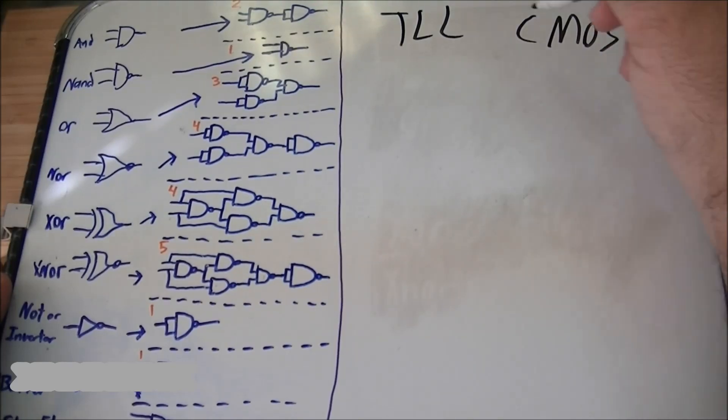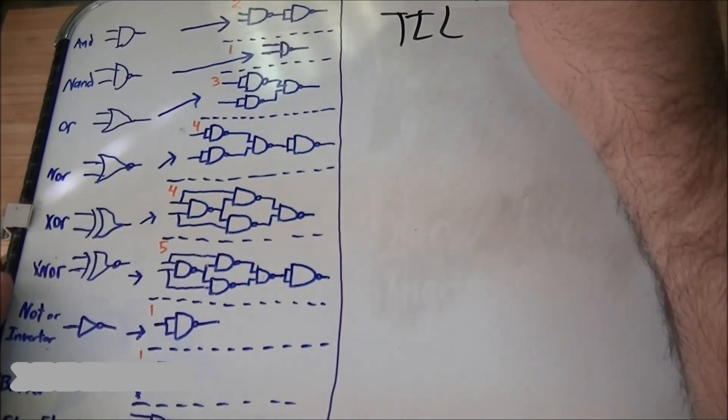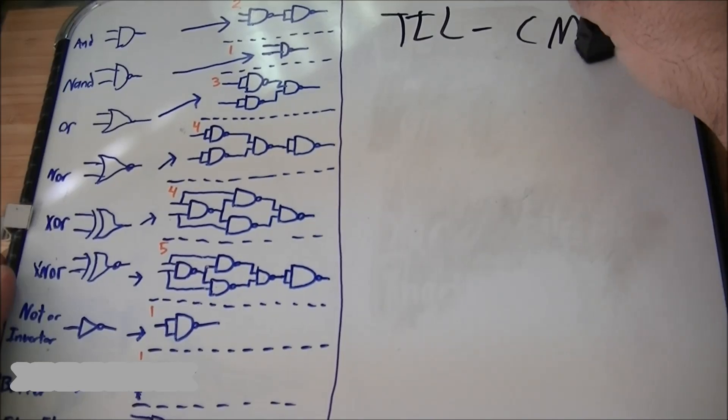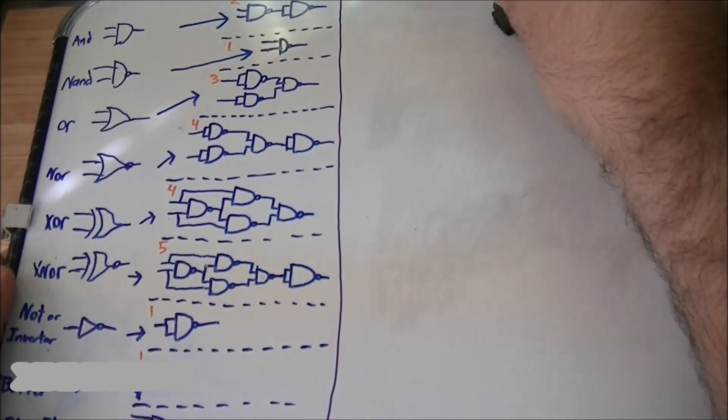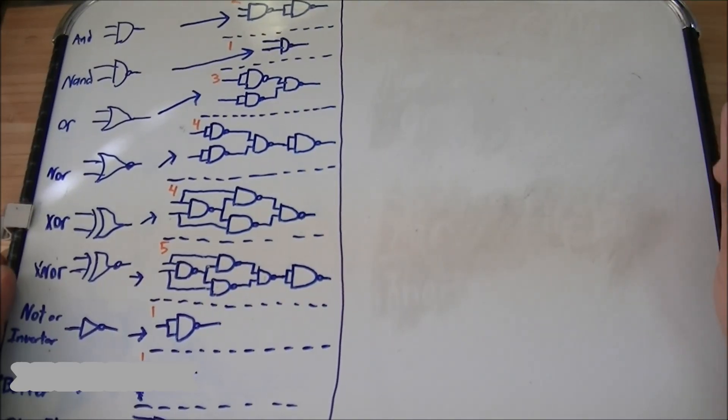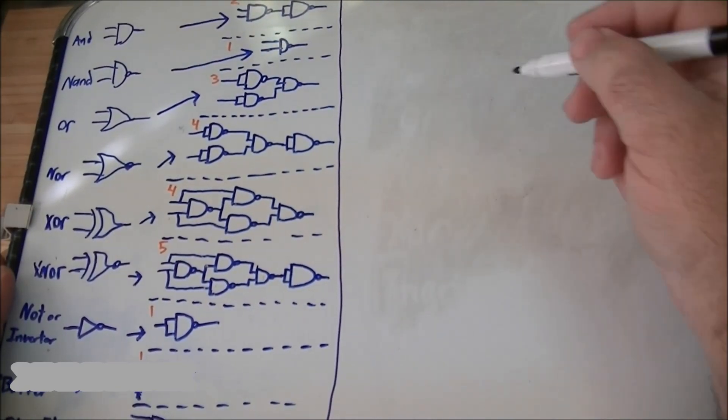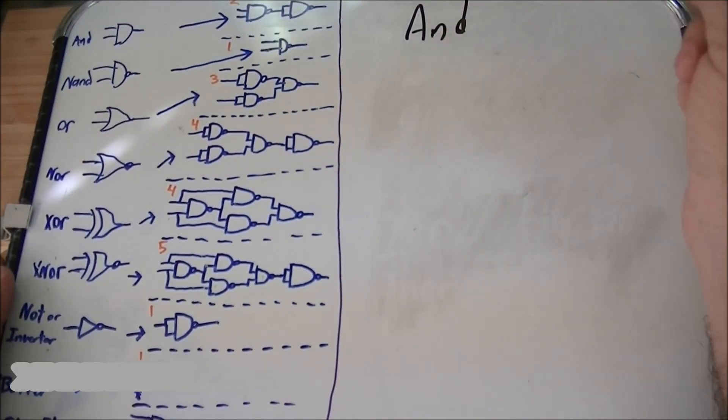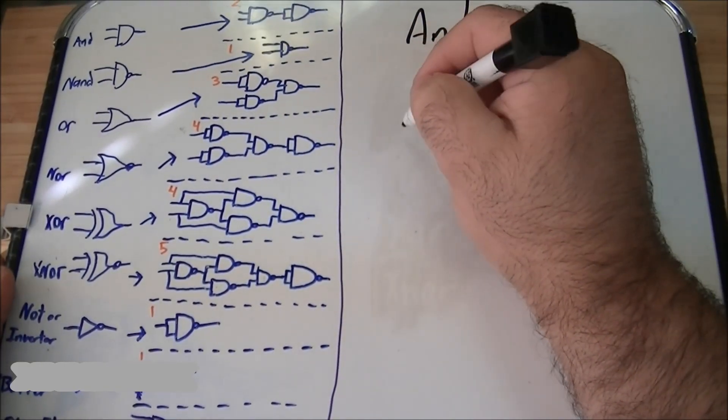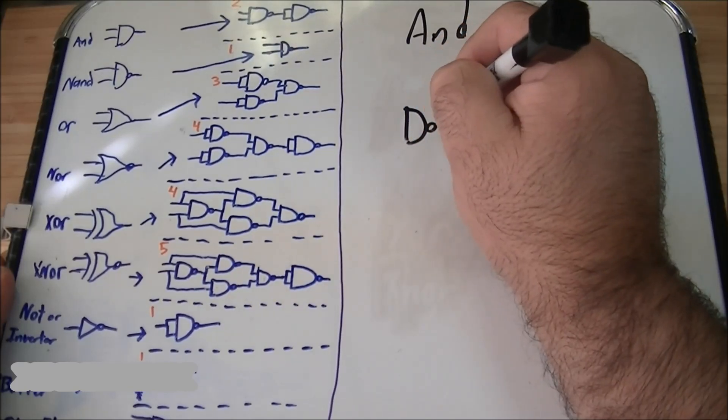I mean TTL, sorry. It works the same way. One is five-volt logic, the other one will go to higher voltages. So, to make an AND gate using NAND gates, it's real simple.